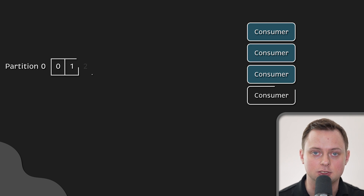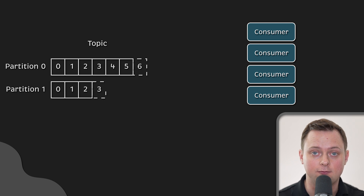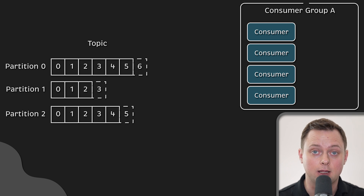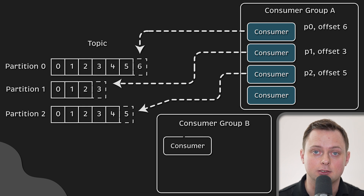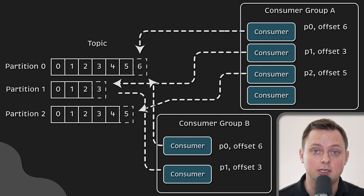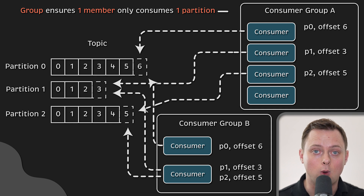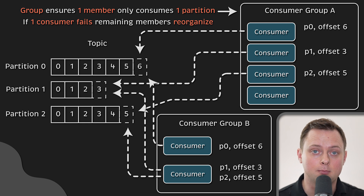Consumers are applications that subscribe to topics and process published messages, sometimes called subscribers or readers. Consumers read messages in the order in which they were generated. A consumer uses an offset to track which messages it has already consumed and stores the offset of the last consumed message for each partition so it can stop and restart without losing its place. Consumers interact with a topic as a group, though a group can consist of only one consumer. This enables scalable processing. The group ensures that each partition is consumed by only one member. If a single consumer fails, the group's remaining members reorganize to compensate for the absent member.